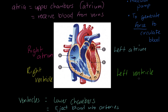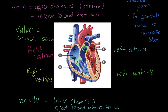One last important thing before we finish: valves. There are numerous valves in this system. There's a valve leading to the pulmonary artery, a valve leading to the aorta, a valve between the right atrium and the right ventricle, and a valve between the left atrium and the left ventricle. What valves do is prevent backflow. When blood is forced up and out of the ventricle into the aorta, it cannot come back the other way — the valve prevents that. That's the structure of the heart in this lesson.